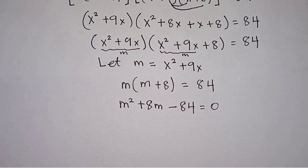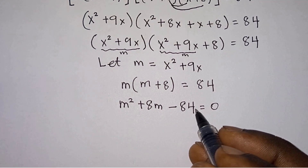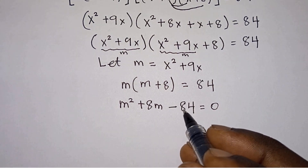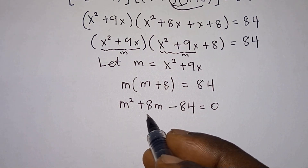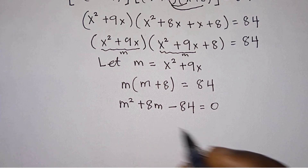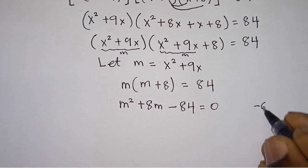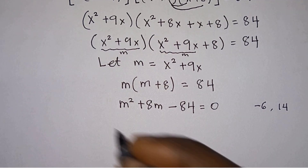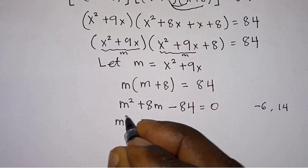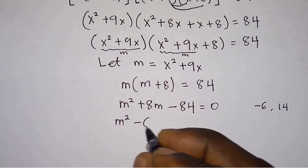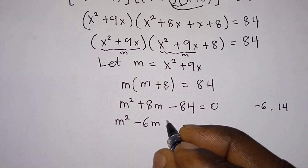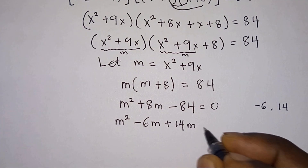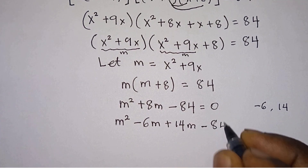To solve this, we find two factors that multiply to negative 84 and sum to positive 8. The factors are negative 6 and positive 14. So this quadratic equation becomes m squared minus 6m plus 14m minus 84 equals zero.